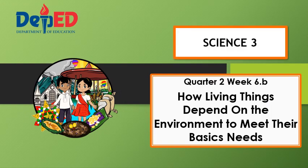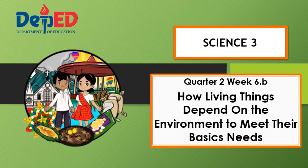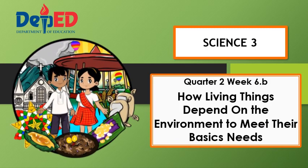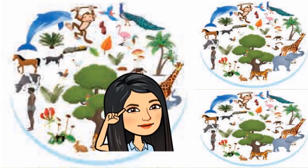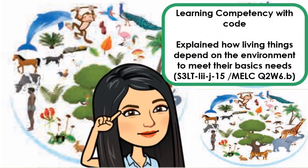Science 3, Quarter 2, Week 6: How Living Things Depend on the Environment to Meet Their Basic Needs. This is our lesson for today. Are you ready to learn? Learning Competency: Explain how living things depend on the environment to meet their basic needs.